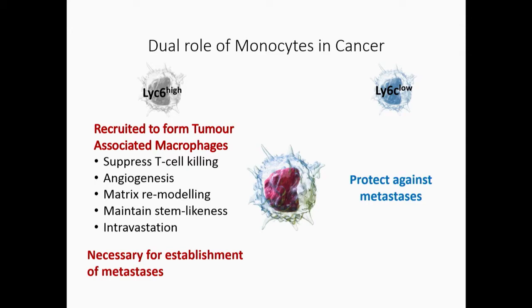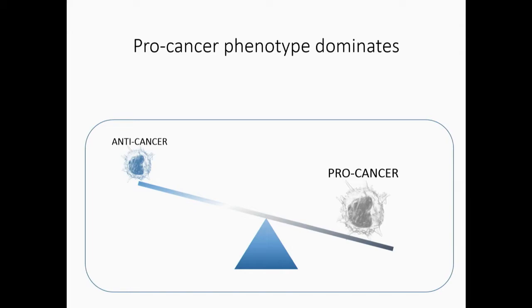And actually, the Ly6C low in Ly6C low-specific mice has been shown to protect against metastases. Just to emphasize here, that has not been shown in humans yet. The population is only about 5 to 10 percent. But they do seem to expand in humans, and the ratio changes. So I want to bring up this idea of rather than knocking out cells, can we actually utilize those cells? Can we actually tilt the balance? Because at the moment, we know that this pro-cancer phenotype actually dominates.